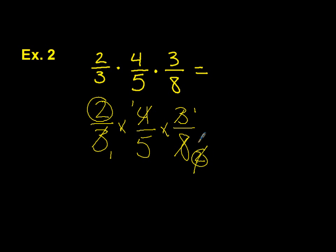I can cross-cancel again. And I have one times one times one, which equals one, and one times five times one, which equals five. Our answer is one-fifth.